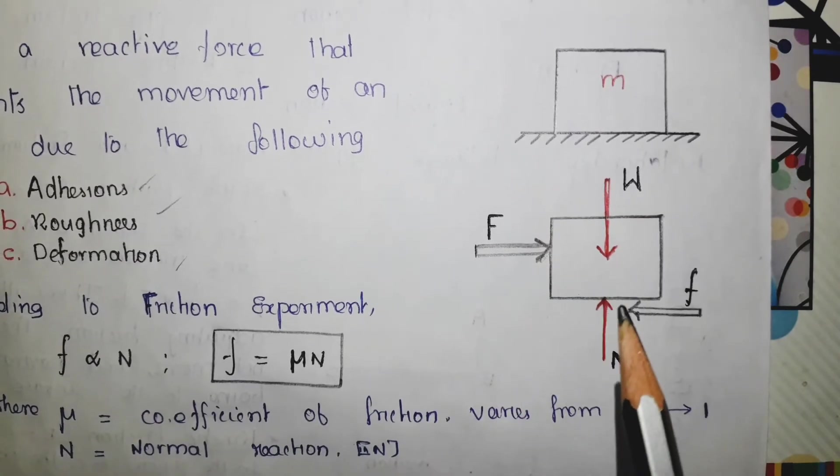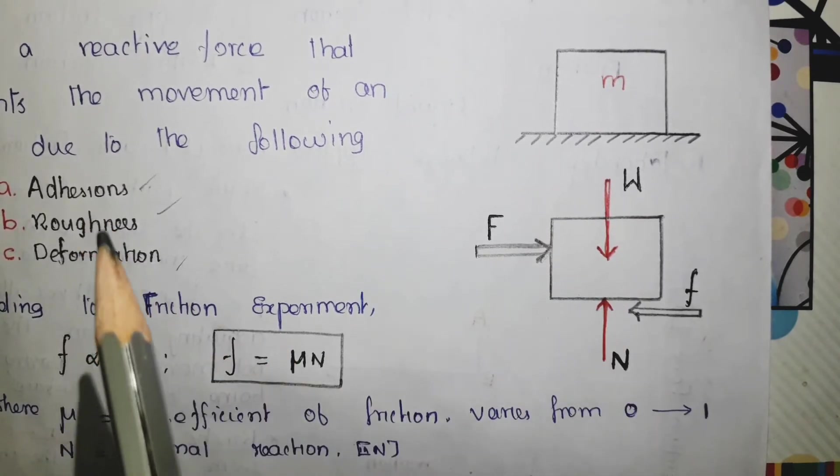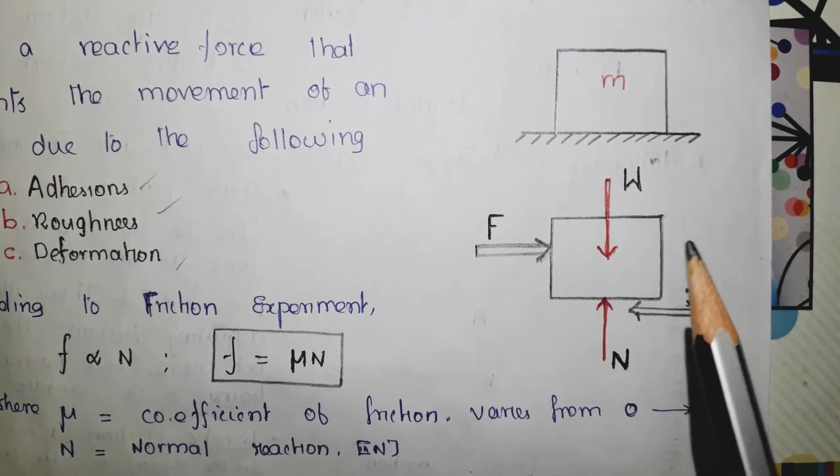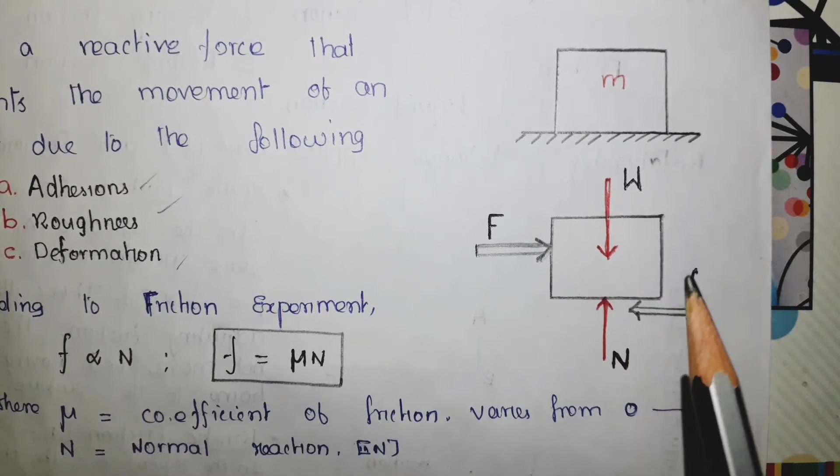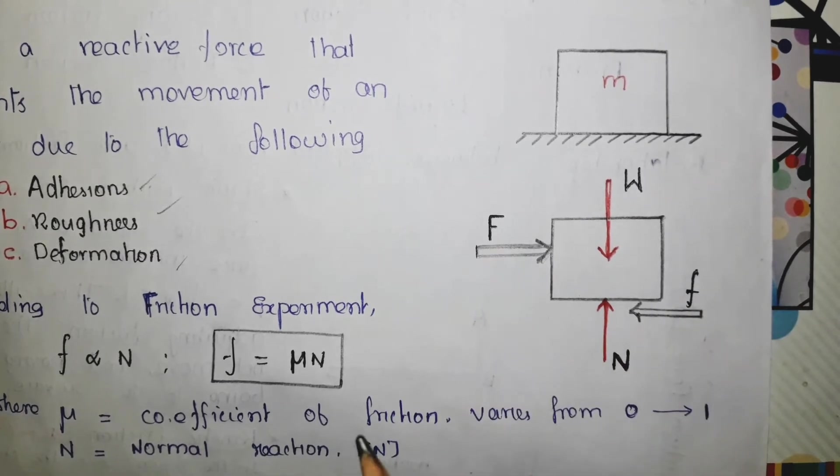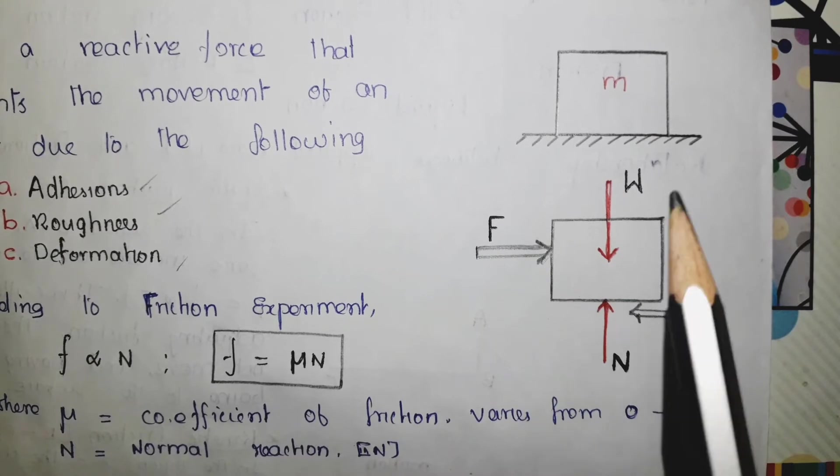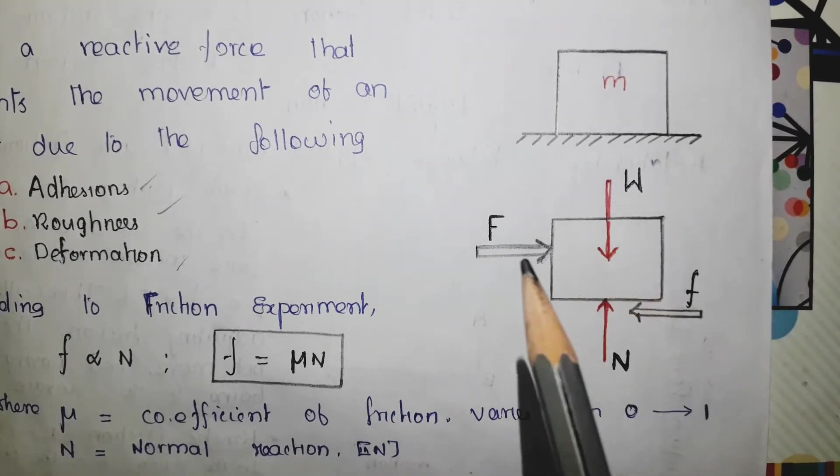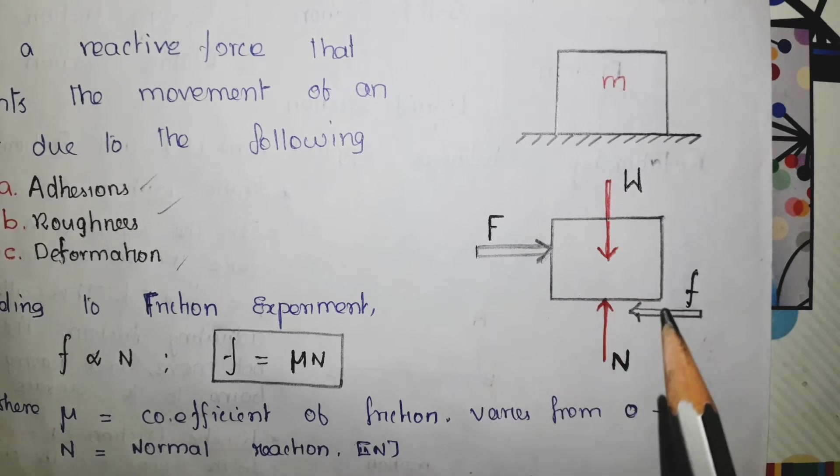And the surface, because of these irregularities, it tries to stop that movement by the friction force. Here, the friction is denoted by small f and the applied force is taken as F. Now, if you look closely, this weight as well as this applied force are the active forces, and the friction as well as the normal reaction are the reactive forces.